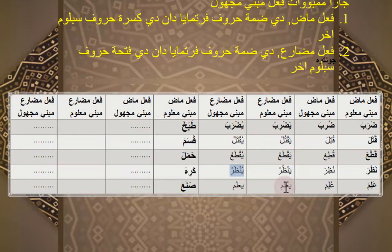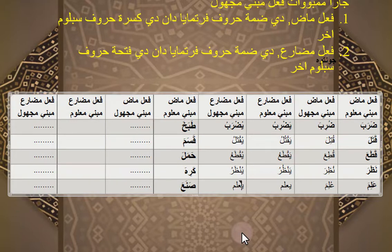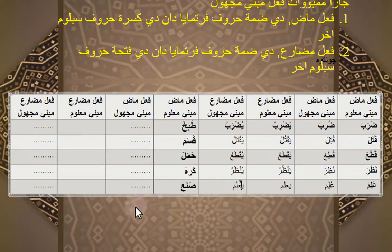Alima ya'lamu. Ya'lamu menjadi Yu'lamu. Alima ya'lamu artinya mengetahui, ya Yu'lamu diketahui. Saya ulangi lagi: cara membuat Mabni Majul fi'il mudhare — di-dhammah awalnya, yaitu Ya; terus di-fathah huruf sebelum akhir. Huruf akhirnya adalah Mim, sebelum akhirnya adalah Lam, maka Lam-nya harus dibaca fathah. Jadi Yu'lamu.